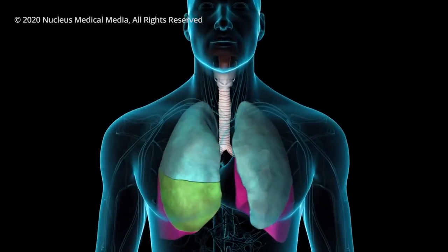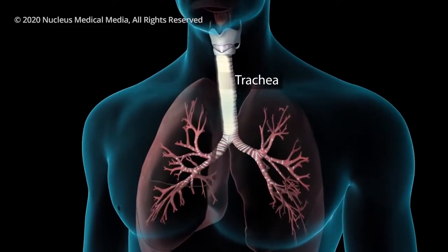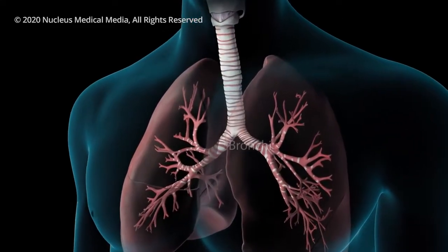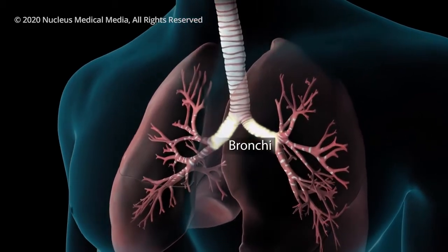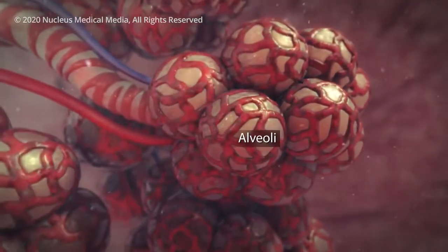Each lung has separate sections called lobes. Normally, as you breathe, air moves freely through your trachea or windpipe, then through large tubes called bronchi, through smaller tubes called bronchioles, and finally into tiny sacs called alveoli.